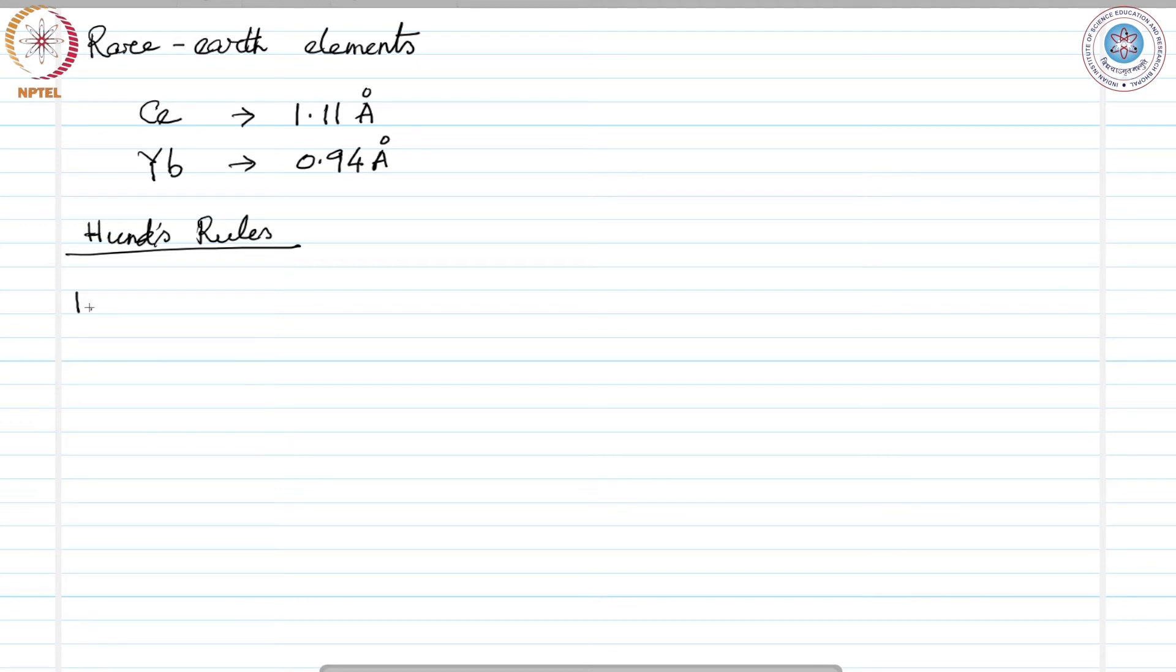The ground state electronic arrangement would be such that the maximum value of the total spin S allowed by the Pauli exclusion principle.